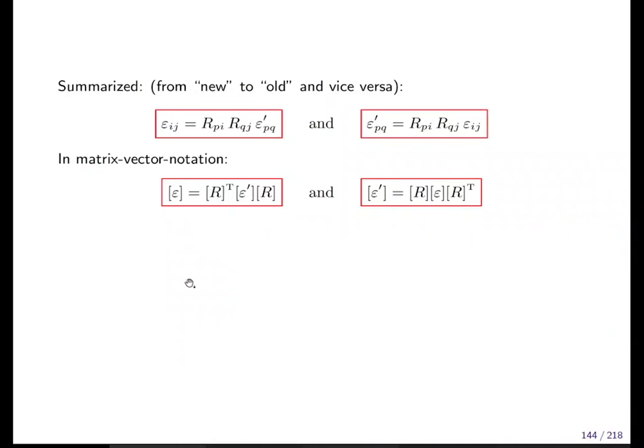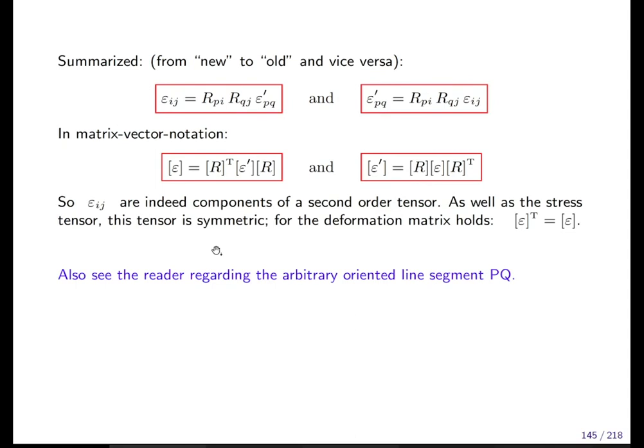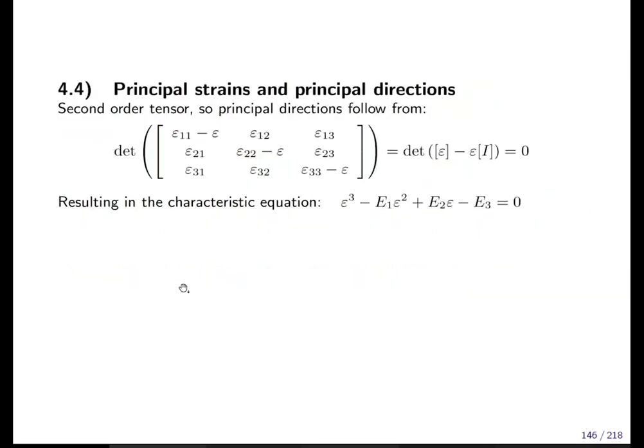Now summary of this transformation rules from new to old. This is the transformation rule of a second order tensor, and from old to new, original to new, this is the transformation rule in different notations, nothing new. So indeed, the ε_ij are components of a second order tensor because they follow the correct transformation rule. By construction, the transformation tensor is already symmetric, so its transpose is equal to the original. And if you want to do the derivation for an arbitrarily oriented line segment PQ, taking along all the position and so on, then you can also look in the reader, but you won't need this for the exam. So this is only for those of you who really are pain resistant. This is pain.